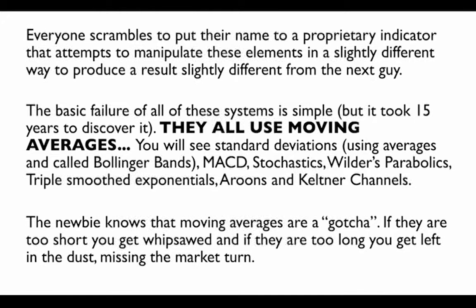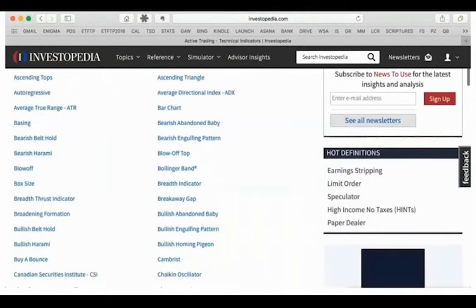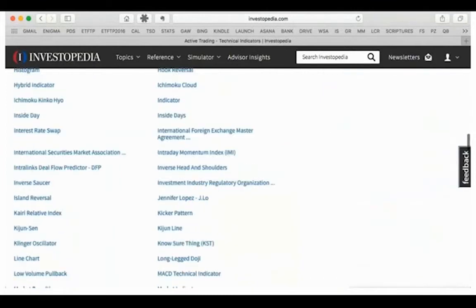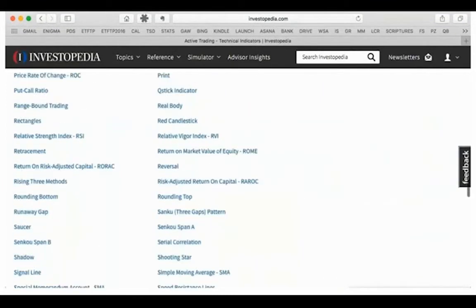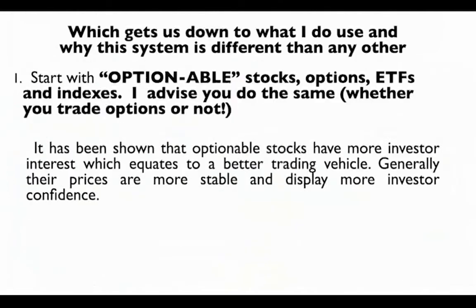Technical study by itself doesn't do it because we're all looking at the same three elements: price, time, and volume. Most indicators concentrate on price and time, not volume. Everyone scrambles to put their name on a proprietary indicator — Bollinger Bands, MACD, Stochastics, Wilder's Parabolics, Triple Smooth Exponentials. Even a newbie knows moving averages are a big gotcha: too short and you get whipsawed, too long and you miss the big market turn. Investopedia lists dozens of indicators — disparity index, fractals, morning stars, stick sandwich, trigger line — and it goes on and on.